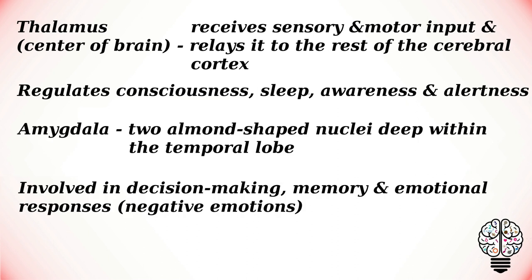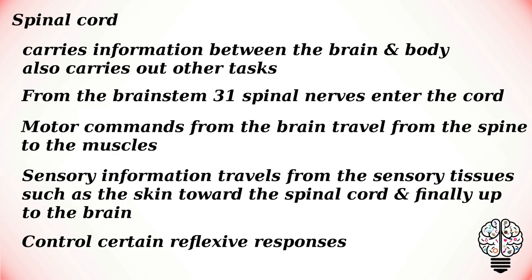The amygdala consists of two almond-shaped nuclei deep within the temporal lobe. They are involved in decision making, memory, and emotional responses, particularly negative emotions.